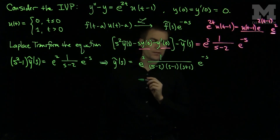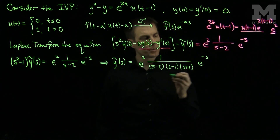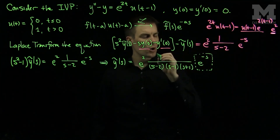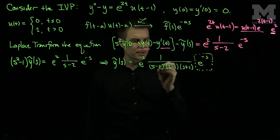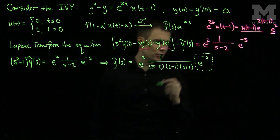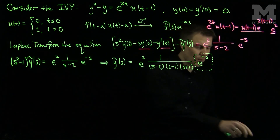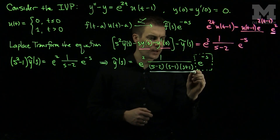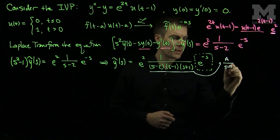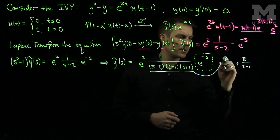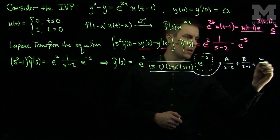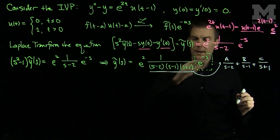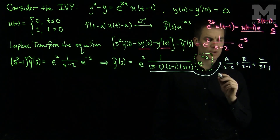Now we find the inverse Laplace transform. When the expression has an e to the negative a s term, we temporarily ignore it, find the inverse Laplace transform of what remains, and shift later. We use partial fractions: 1 over (s minus 2)(s minus 1)(s plus 1) equals A over s minus 2, plus B over s minus 1, plus C over s plus 1. Multiplying through by the denominator lets us find the coefficients.